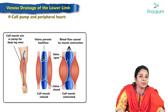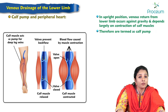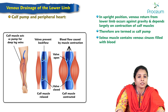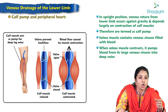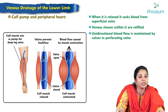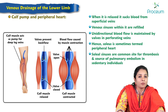The calf muscles are considered the peripheral heart. In the upright position, venous return from the lower limb occurs against gravity and depends largely on contraction of the calf muscles, termed the calf pump or peripheral heart. The soleus muscle contains large venous sinuses filled with blood; when it contracts it pumps blood from these sinuses into the deep veins, and when it relaxes it sucks blood from the superficial veins to refill the sinuses. Unidirectional flow is maintained by the valves in the perforators; hence the soleus is sometimes termed the peripheral heart of the body.